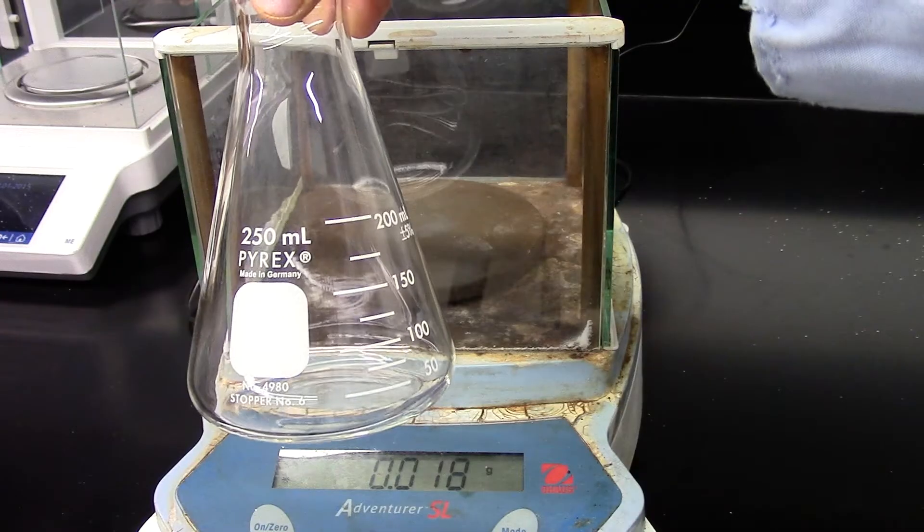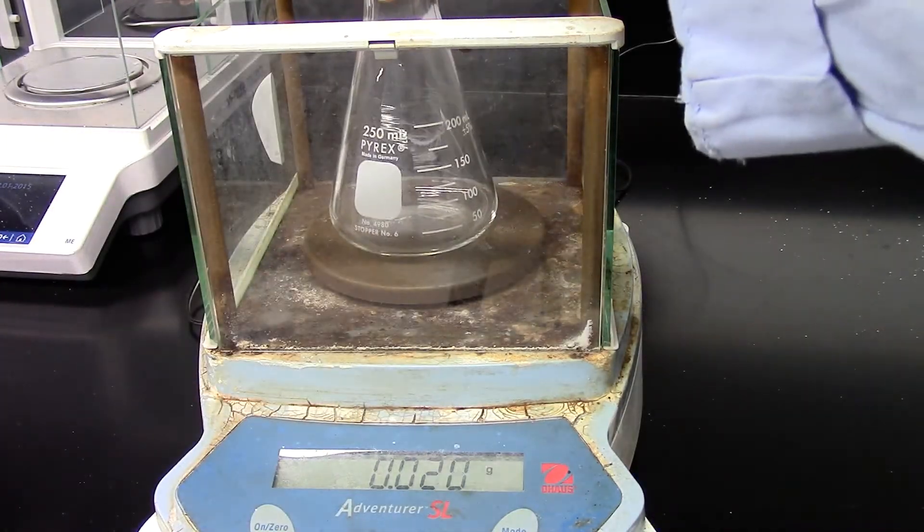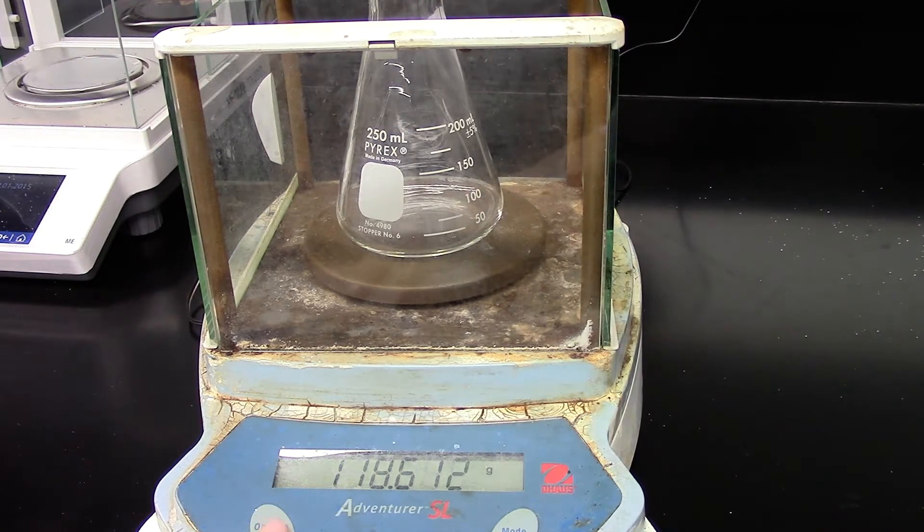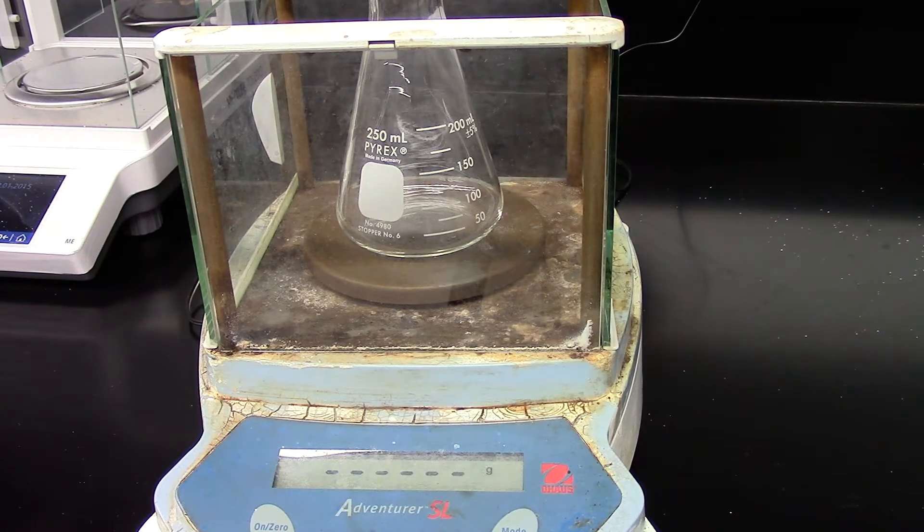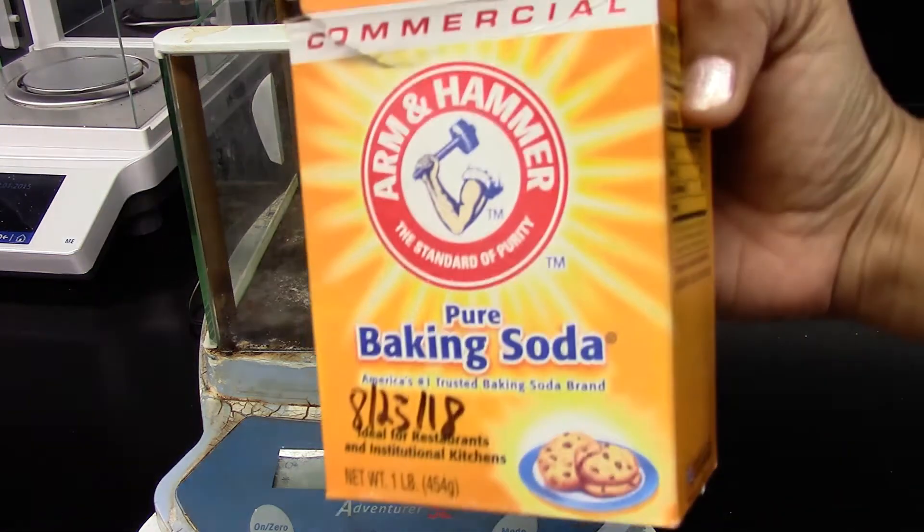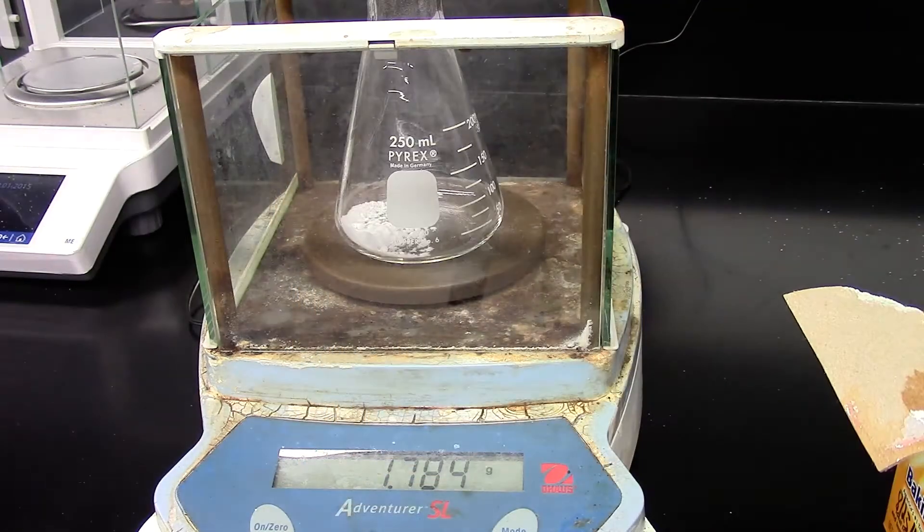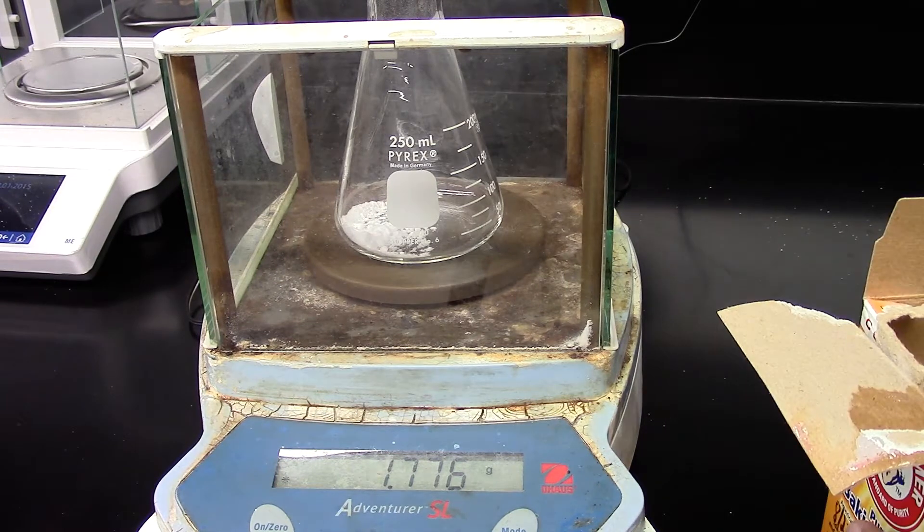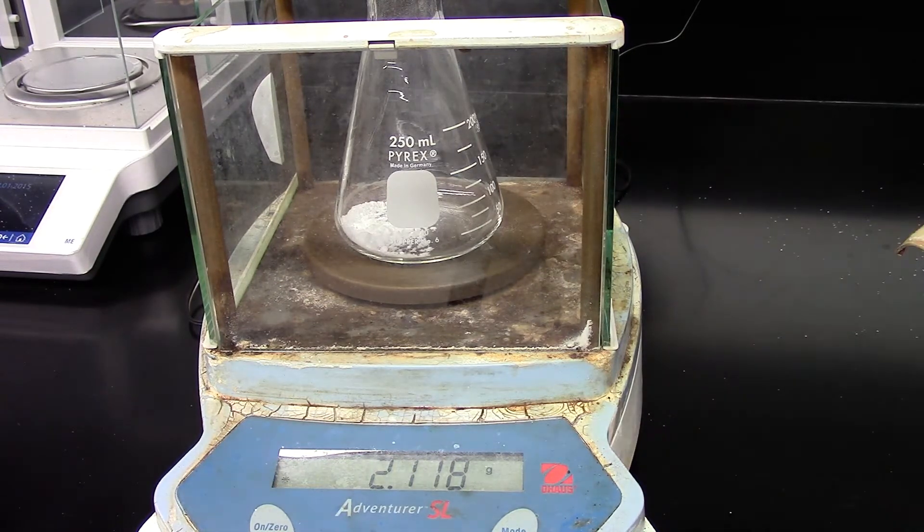250 milliliter Erlenmeyer flask. Place it on the balance. Tare it. And weigh about two grams of bicarbonate which is baking soda. So we weighed 2.118 grams of baking soda.